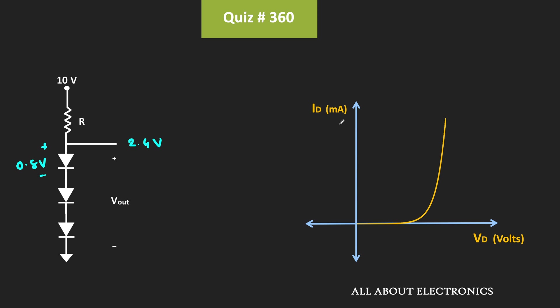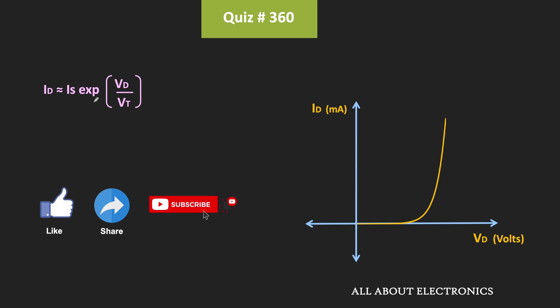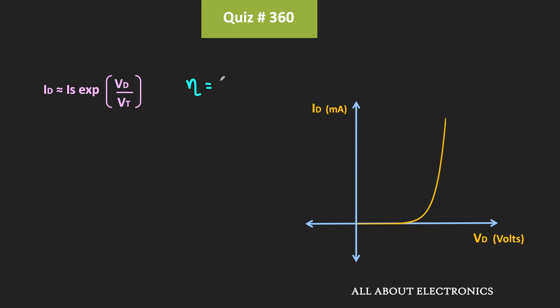So first of all, let us find out the diode current which will give us the forward voltage drop of 0.8V, and with the help of it we will find resistor R. As you know, the diode current ID can be given by the expression: ID = Is times e to the power (Vd / Vt), where the ideality factor is assumed to be 1. Whenever the forward voltage drop is 0.7V, the diode current is Id1, so Id1 = Is times e to the power (Vd1 / Vt).